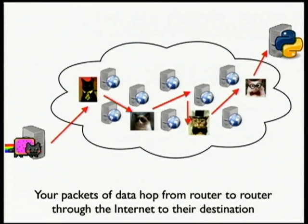I happen to live in Boston, and I wanted to talk to python.org. How do I get from Boston to wherever the physical hardware hosting the python.org web service lives? The IP protocol is responsible for figuring this out. It uses IP addresses to figure out hop to hop to hop through computers and routers on the Internet — which path to take. We can actually look at this in a really fun interactive way using Python, using a library called Scapy.